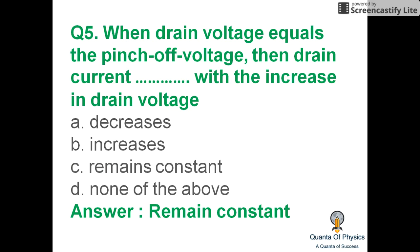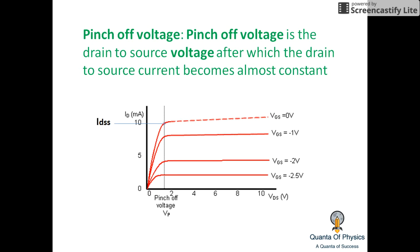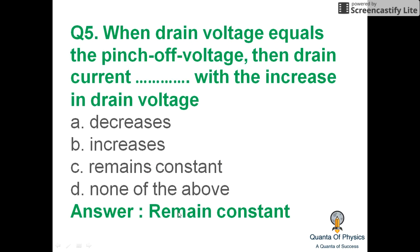When drain voltage equals pinch-off voltage, the drain current remains constant with any further increase in drain voltage. Pinch-off voltage is the drain-to-source voltage after which the drain current becomes almost constant, as shown in the graph. At VGS equal to zero, the drain current is approximately constant; this voltage is called pinch-off voltage, at which IDSS is nearly constant. Hence the answer is: the drain current remains constant.